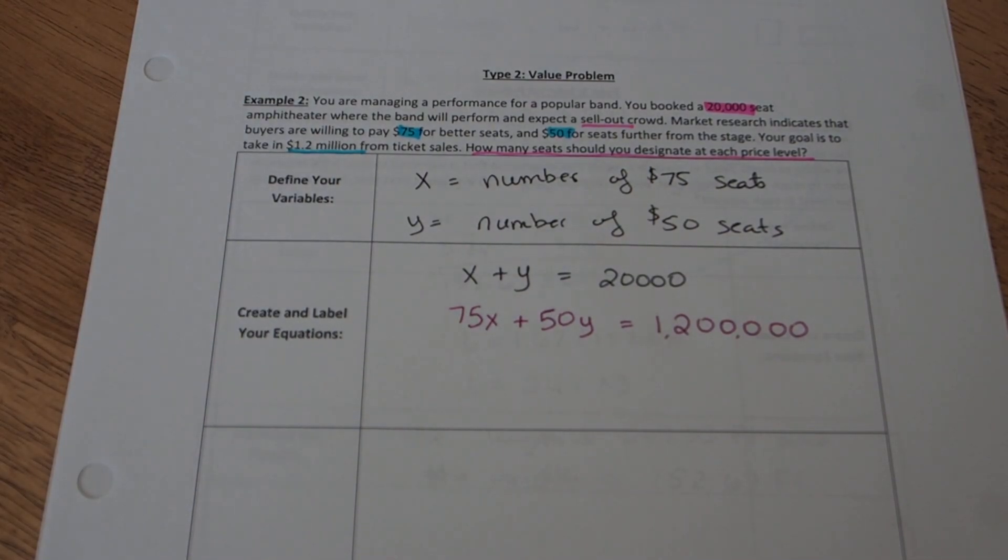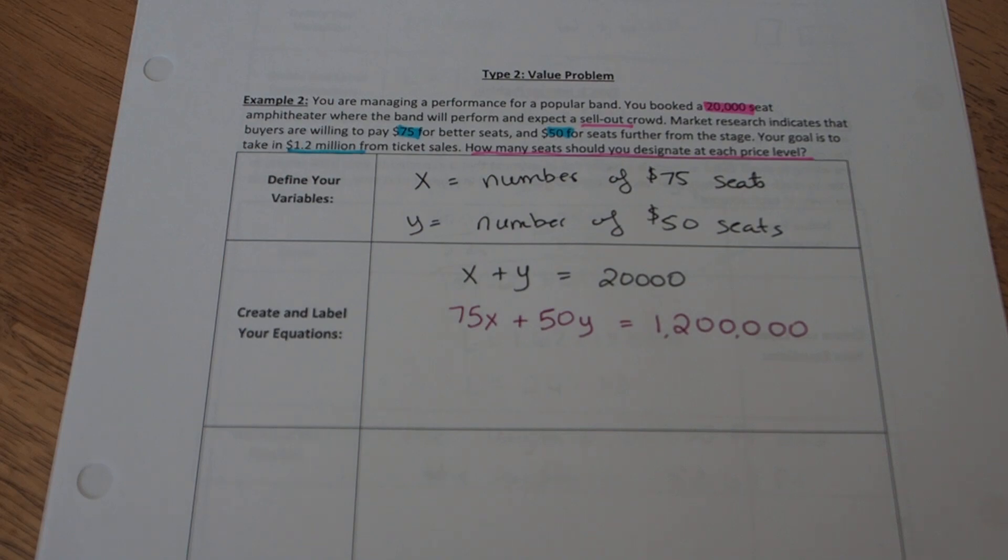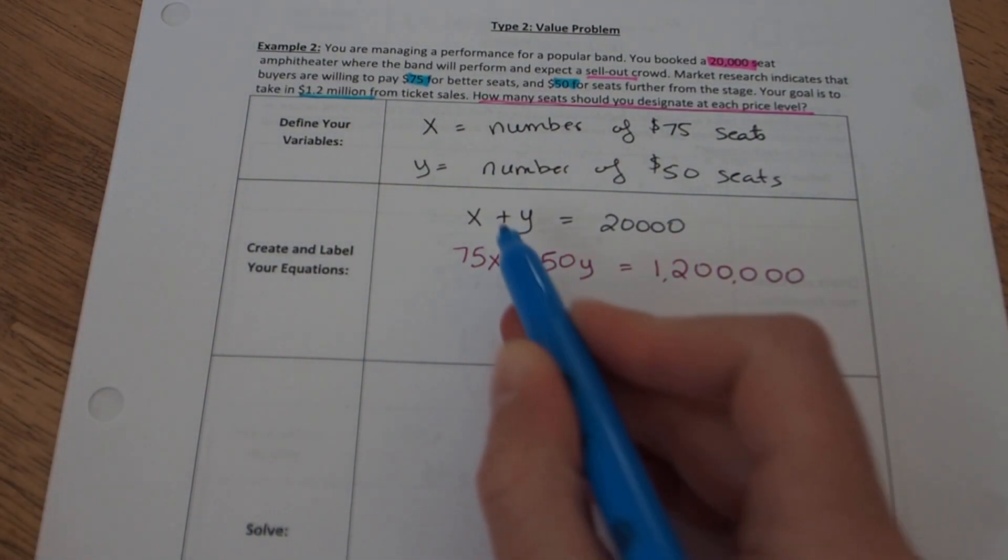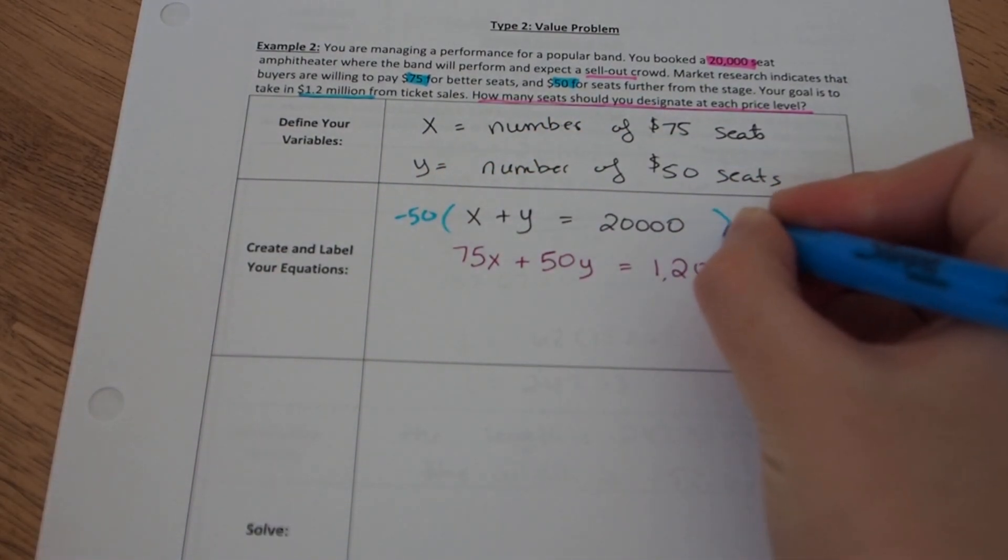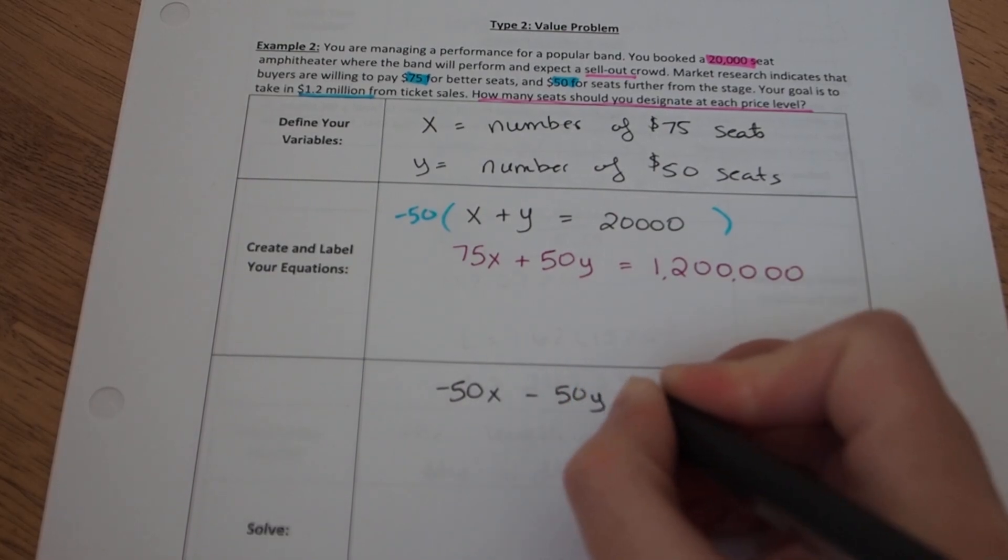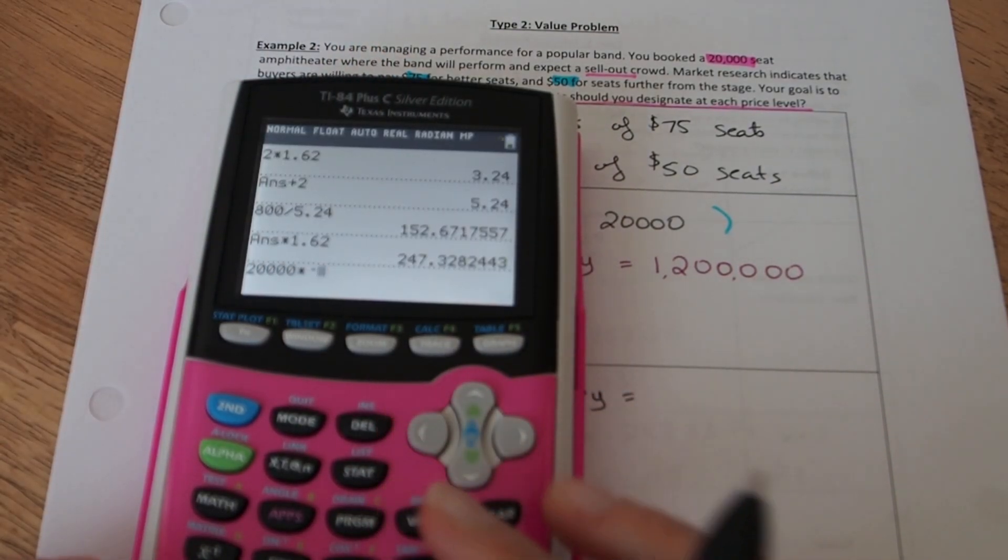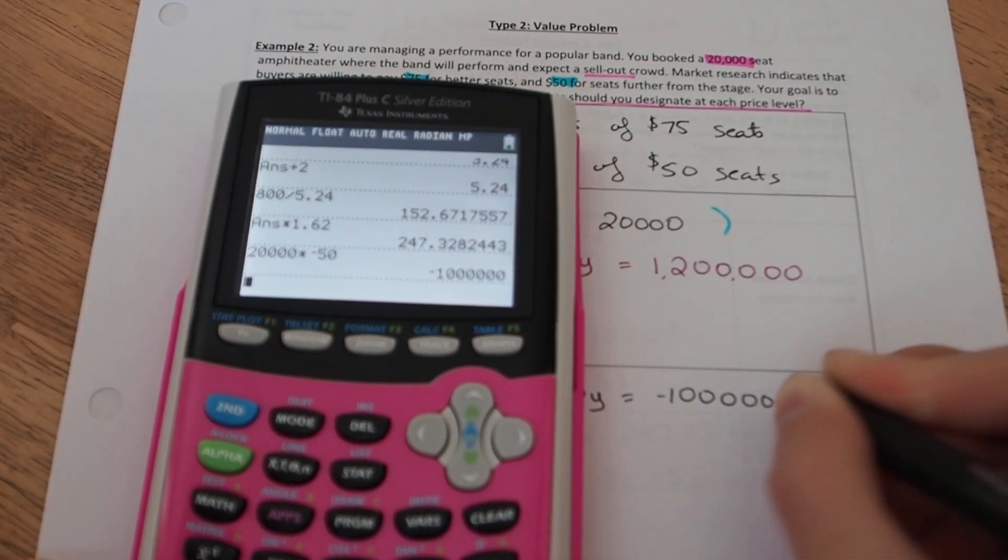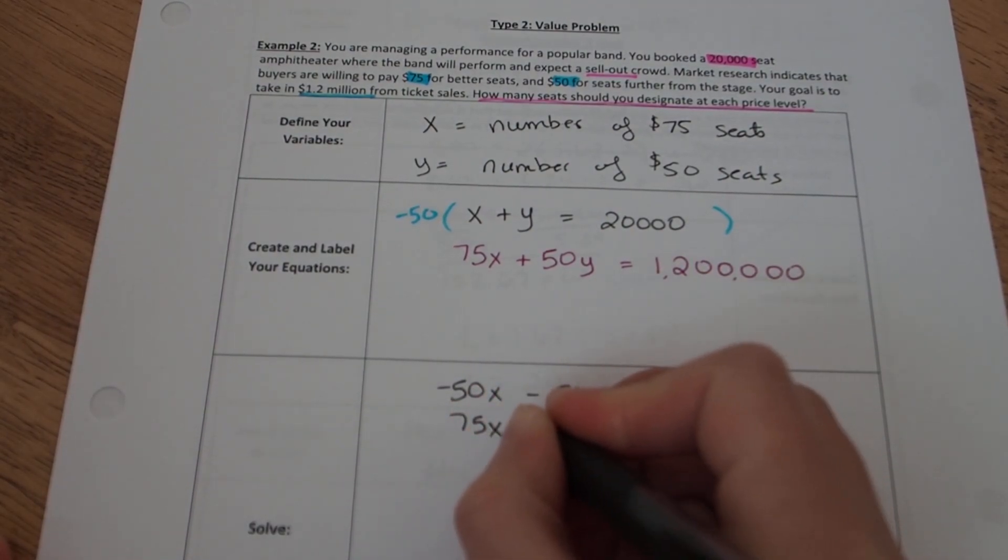Now, I can use either substitution or elimination to solve this system. It wouldn't be too difficult to solve for one of the variables in the first equation, and I also could easily multiply by a value to get elimination to work. Since I used substitution in the last one, I'm going to go ahead and use elimination this time. If I want to use elimination, I'm looking at my GCF, 75 and 50. The smaller one is 50, so I'm going to take my top equation. I'm going to multiply it by negative 50 to get a positive 50 in the bottom equation and a negative 50 in the top equation. That's going to give me negative 50 times x minus 50 times y equals negative 1,000,000. And the second equation was going to have no change since it already had the positive 50 for y. So I'm eliminating y right here.